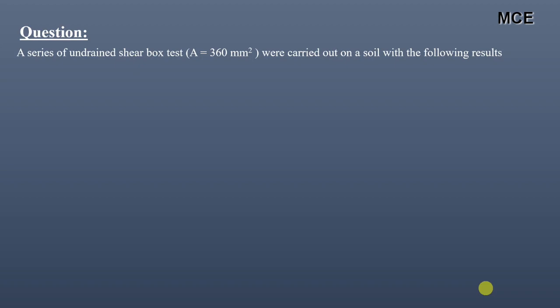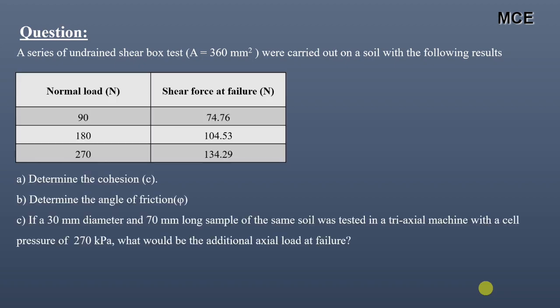Hello and welcome back to Master Civil Engineering. In this video we will learn how to calculate the shear parameters from the direct shear test results. The question states that a series of undrained shear box tests having a cross-sectional area of 360 mm squared were carried out on a soil with the following results.